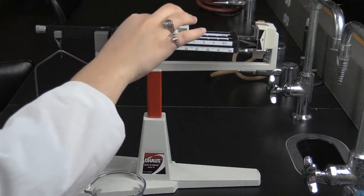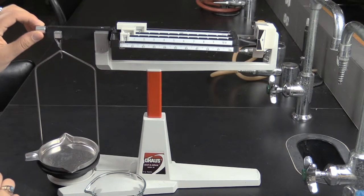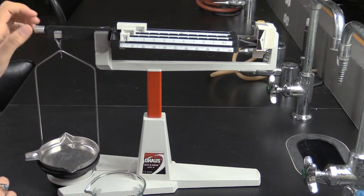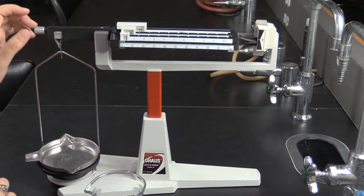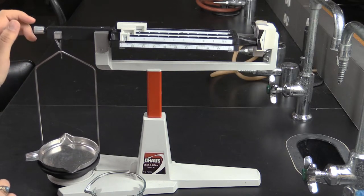First, slide all of the sliders to their zero marks. These can be found on the far left. Once in this position, the knurled nut on the left side of the beam is loosened or tightened until the beam line on the right lines up with the line on the fixed portion of the balance.